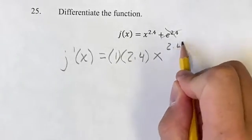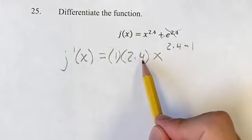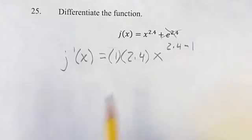Then our new exponent is going to be 2.4, which is the old exponent, minus 1. So for power functions, you bring down the exponent into the coefficient and then subtract 1 for your new exponent.